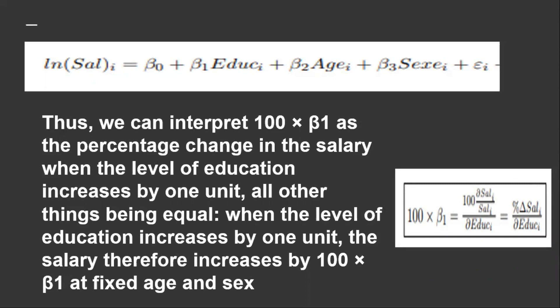All other things being equal, when the level of education increases by one unit, the salary therefore increases by 100 times beta_1 at fixed age and sex.